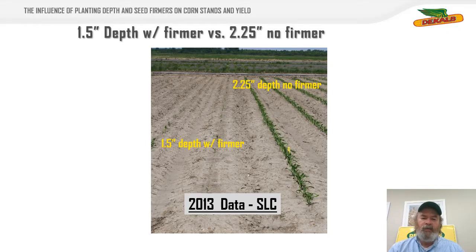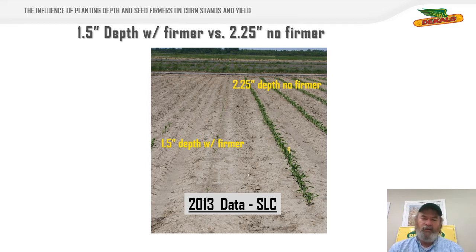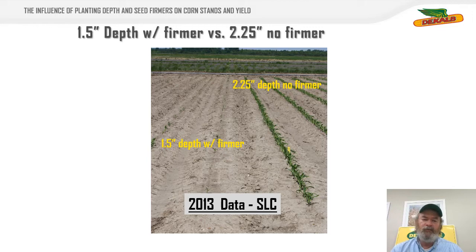Over the years, we have looked into planting depth in any number of ways and evaluated seed firmers and all sorts of equipment. When you think about what planting depth does for corn, number one, it determines rooting depth and the rooting characteristics of the plant. There's also an impact on bird predation. This is a test we did in 2013, and you see that the blackbirds demolished this shallow planted corn. Where we planted deeper — particularly where we used a firmer and got good seed-to-soil contact — we established and maintained a pretty good crop, because if the seed and structure are deep enough, the plants generally come back and make a crop.